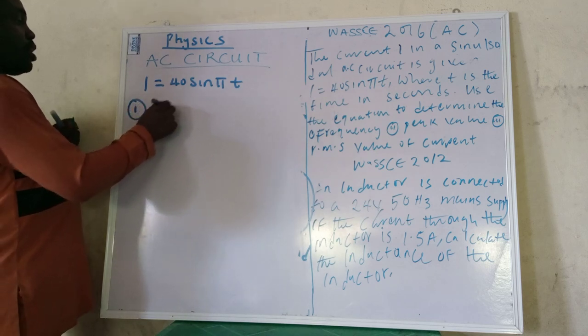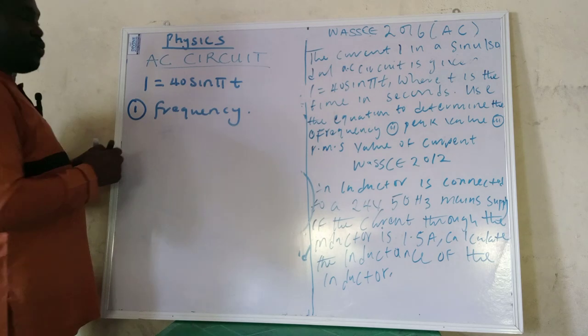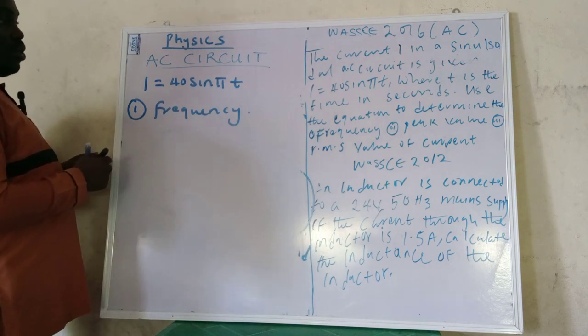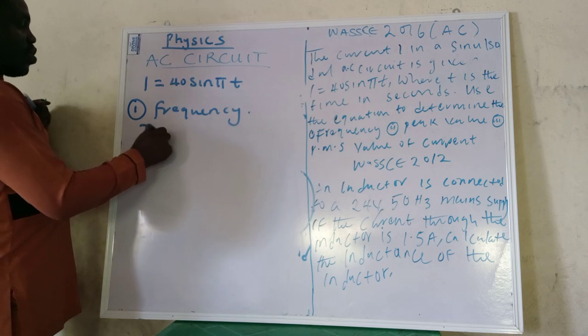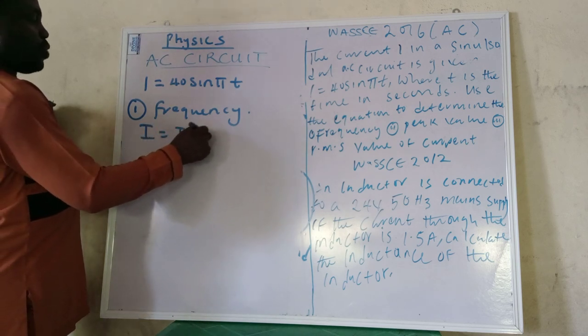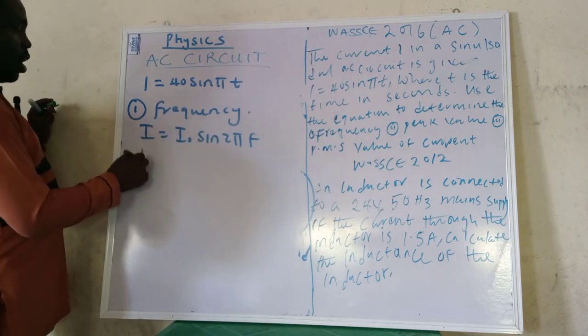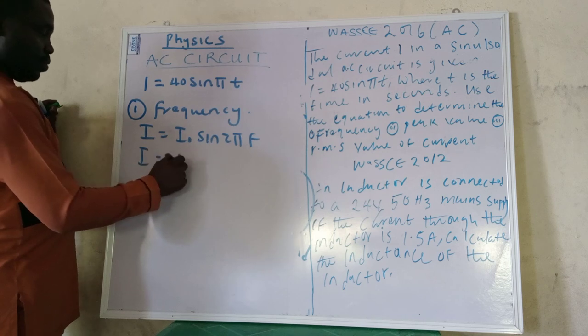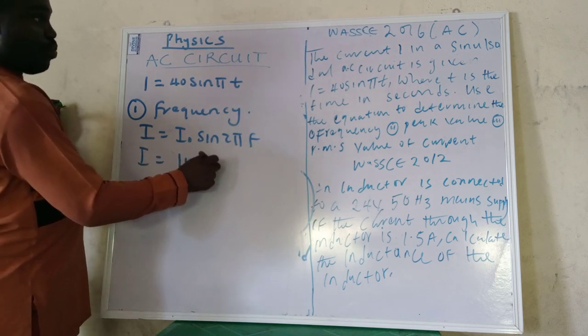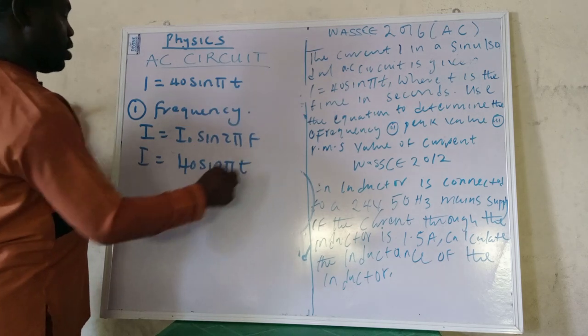Number one thing we are told to determine is the frequency. Obviously, what do you do? You have to compare the general equation. In solving this question, compare our general equation with the given equation. So we are comparing now, please make sure you follow.